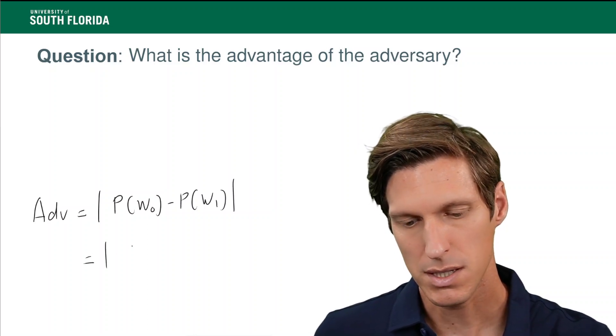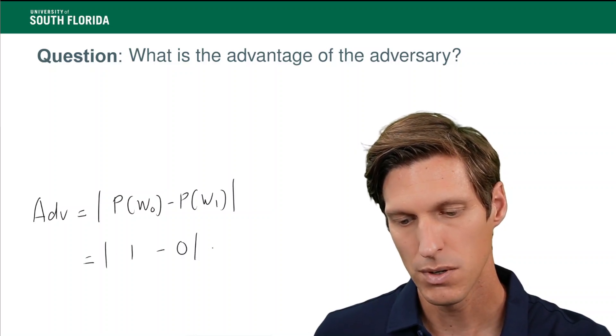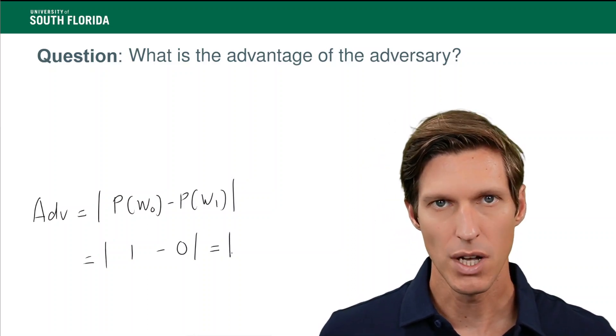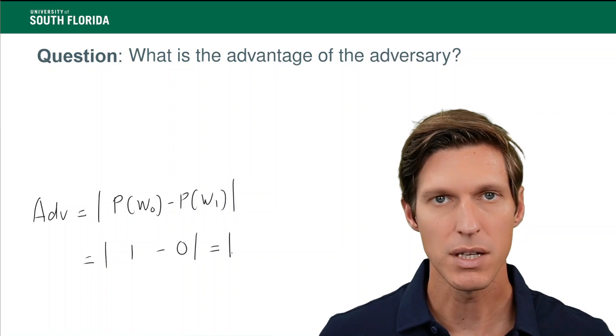And here, what that means is the difference between 1 and 0, which is 1. So we have shown that the advantage was non-negligible. It's actually 1, the biggest value that it can take.